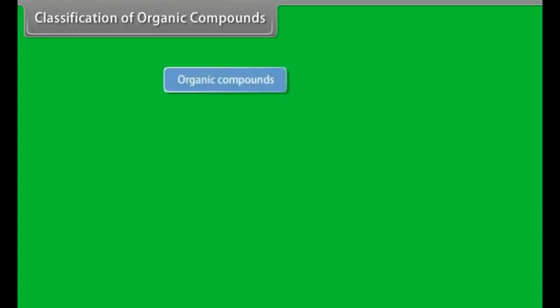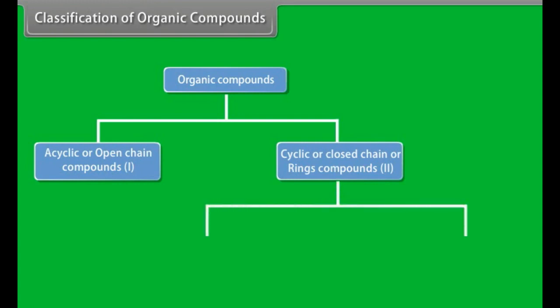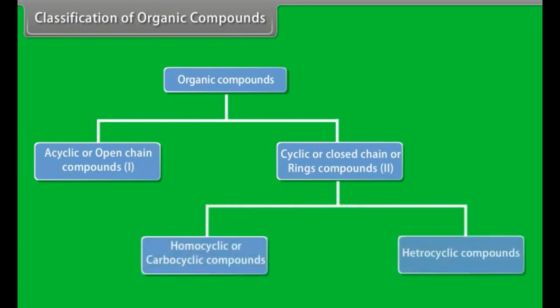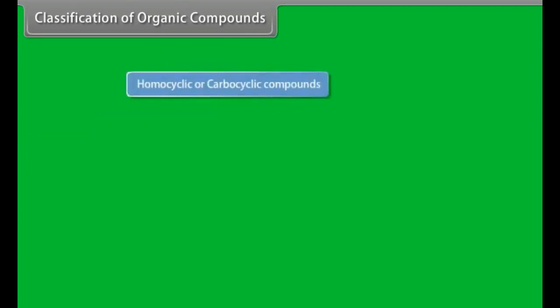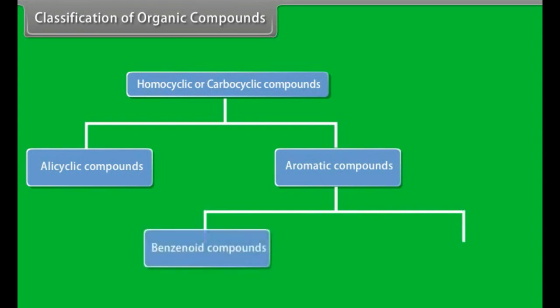Classification of organic compounds: organic compounds can be grouped into acyclic or open-chain compounds, and cyclic or closed-chain or ring compounds. Cyclic compounds can be further divided into homocyclic or carbocyclic compounds and heterocyclic compounds. Homocyclic can be further divided into alicyclic and aromatic compounds. Aromatic compounds can be further divided into benzenoid and non-benzenoid compounds.